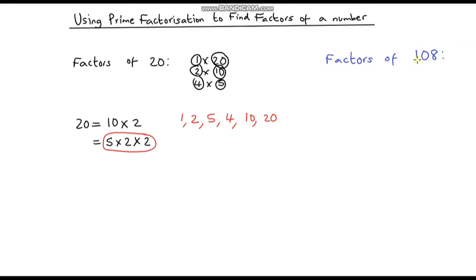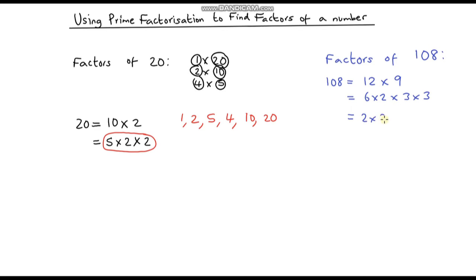Let's look at all of the factors of 108. The first thing I'm going to do is break 108 down into the product of its prime factors. I know that 108 is 12 times 9. Neither of these are prime, so we break them down: 12 is 6 times 2, and 9 is 3 times 3. But 6 is not prime, so 6 breaks down into 2 times 3. That gives us 2 times 3 times 2 times 3 times 3, and all of these are prime numbers.